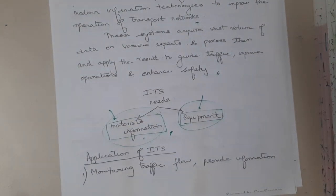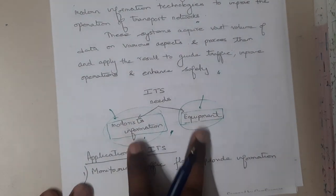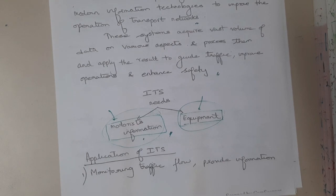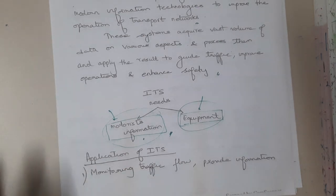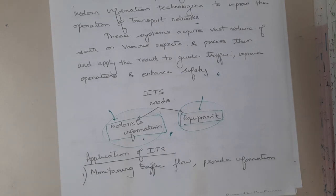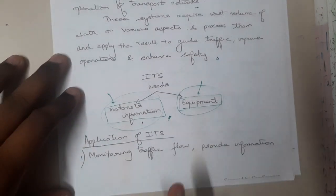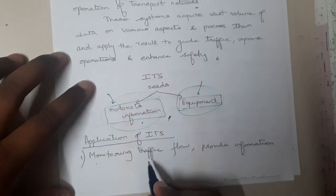While discussing applications, I'll be pointing out these equipment and information requirements. In the next lecture we'll be discussing four to five applications in detail. The first application is monitoring traffic flow and providing information — by observing the traffic flow you understand what to do, and based on that analysis you provide signals and manage congestion.